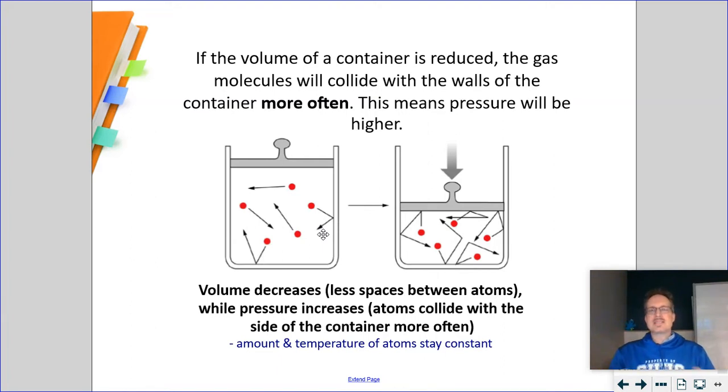Remember, volume is distance between particles. Pressure is how often they hit the side of the container. So if I was to push down on this and decrease the volume from this much volume to that much volume right there. Notice, I still have the same number of gas particles. There's still five. But when I decrease the volume, they're going to have to hit the sides of the container more often. So when my volume decreases in the container, my pressure is automatically going to increase because they're going to hit the side of the container more often.